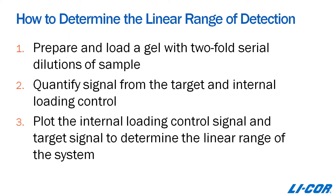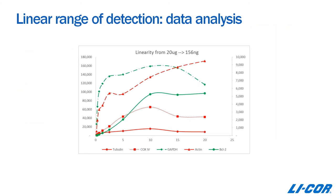Here's an example using actual data. The target is BCL2, which is involved in apoptosis, and we evaluated four different housekeeping proteins along with the target. As the amount of lysate increases, the target signal looks linear to about 10 micrograms. However, several of the housekeeping proteins fall apart pretty quickly. In this particular system, you get a pretty linear response for COX4, tubulin, and the target at about five micrograms of lysate. Based on this, that would be a good starting point to begin your experimental analysis.